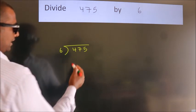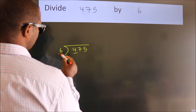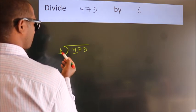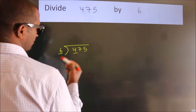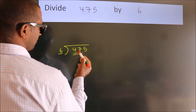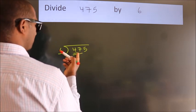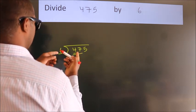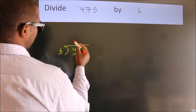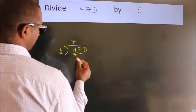Next, here we have 4, here 6. 4 is smaller than 6, so we should take 2 numbers. 47. A number close to 47 in the 6 table is 6 times 7, which is 42.